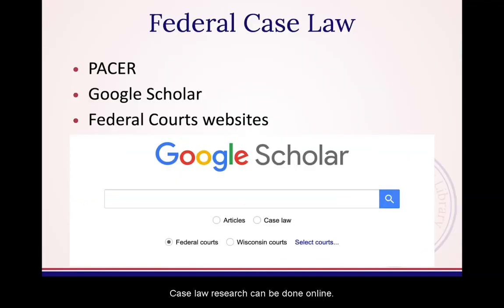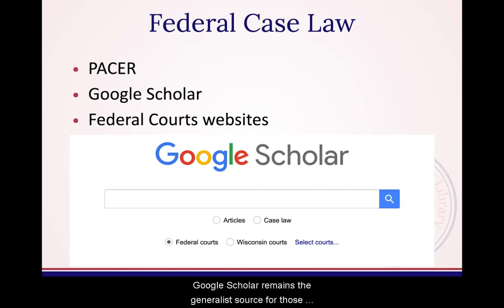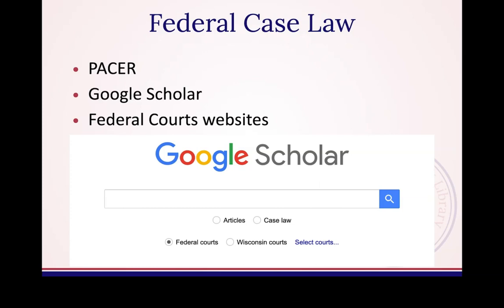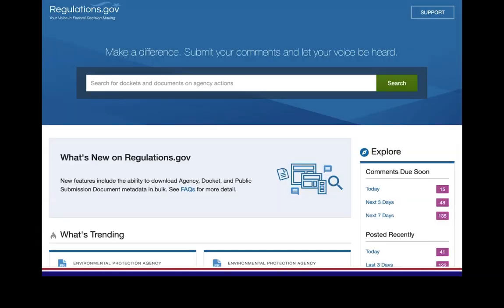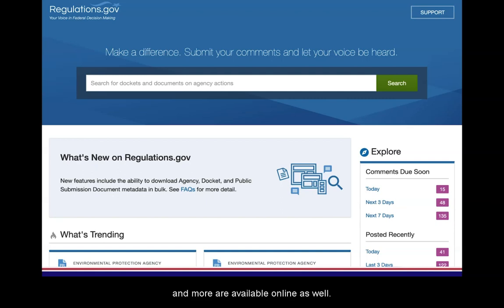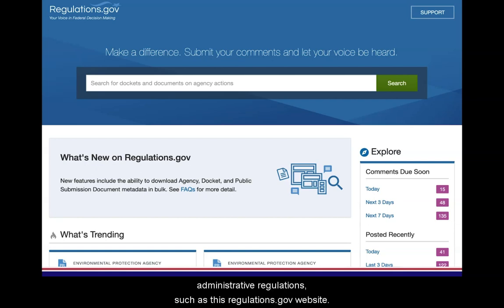Case law research can be done online — these are just a sampling of tools. Google Scholar remains the generalist source for those who want to do simple keyword searches across multiple jurisdictions. Regulations, presidential documents, and more are available online as well. There are even comment portals for pending administrative regulations, such as the regulations.gov website.